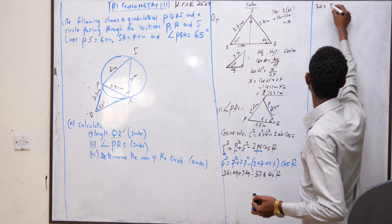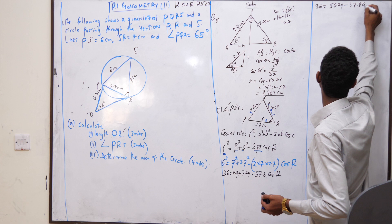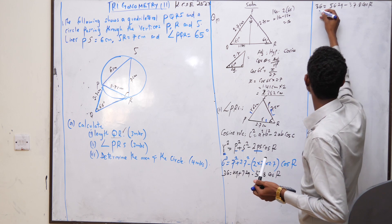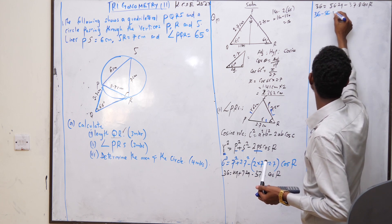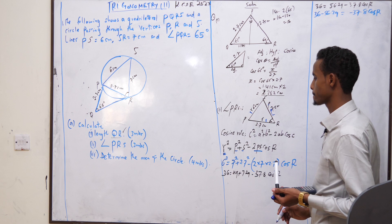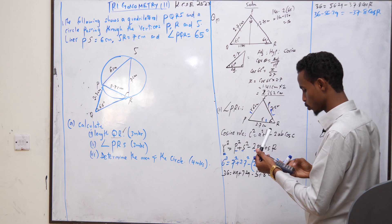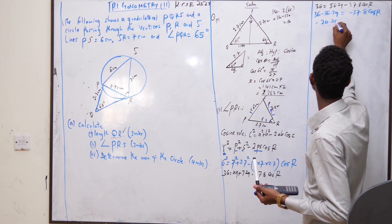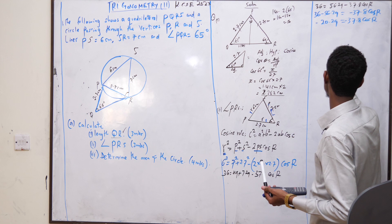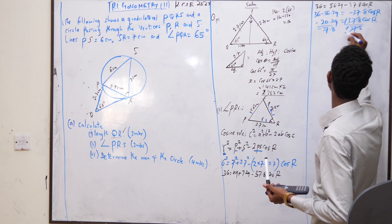Finally, it becomes 36 equals 49 plus 7.29, that is 56.29, minus 37.8 cos R. How can we find it? It becomes 36 minus 56.29 equals minus 37.8 cos R. Finally, 36 minus 56.29, minus 20.29, equals minus 37.8 cos R. How can we get cos R? Divided by negative 37.8.